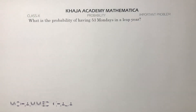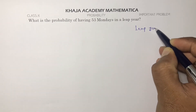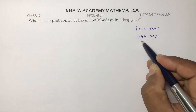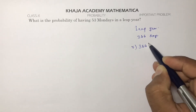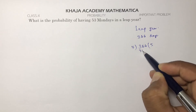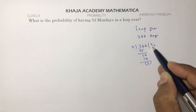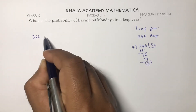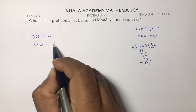What is the probability of having 53 Mondays in a leap year? A leap year has 366 days. Dividing 366 by 7 gives 52 weeks plus 2 extra days. So in a leap year we have 52 weeks plus 2 days.